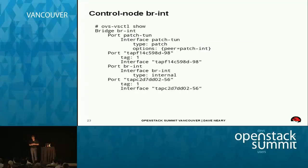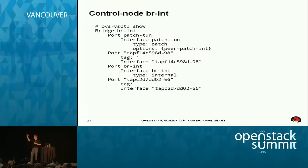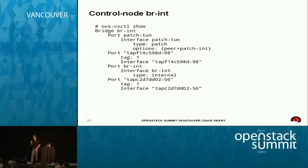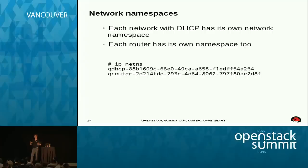On the br-int, we see two tap devices — tap-F14 and tap-C2D7DD — both with VLAN tag 1, associated with the same instance we saw on the compute node. Each network subnet with DHCP has its own network namespace, and each router has its own namespace. If you run 'ip netns', you see a Q-DHCP namespace and a Q-router namespace. This allows multiple DHCP domains with overlapping IP addresses to exist on the same OpenStack cluster.